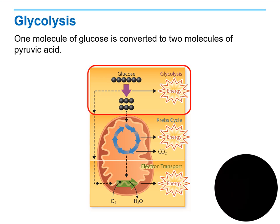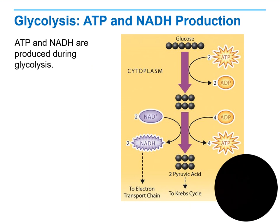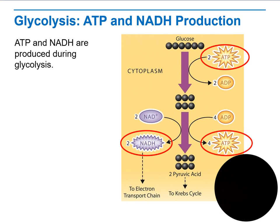As you can see, we start by converting glucose through the process of glycolysis, which requires energy to break down the glucose. We end up going through the Krebs cycle, then on to the electron transport chain to release that energy. During glycolysis, ATP and NADH are produced. This is how glucose is converted into two pyruvic acids, which then go through the Krebs cycle and on to the electron transport chain.